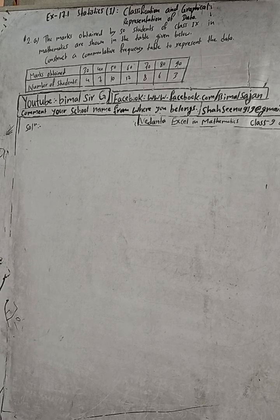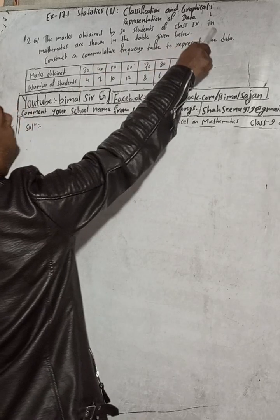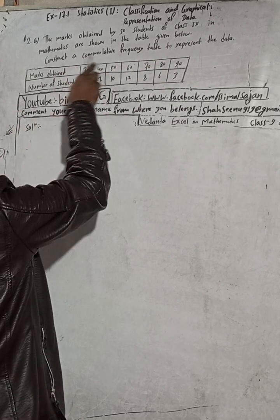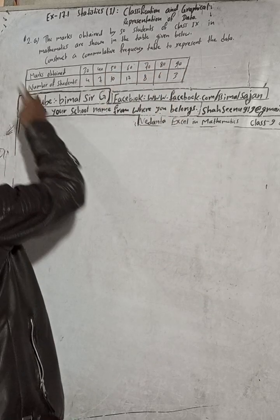Here the question is 2a: The marks obtained by 50 students of Class 9 in mathematics are shown in the table given below. Construct a cumulative frequency table to represent the data.